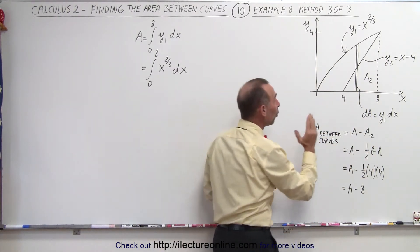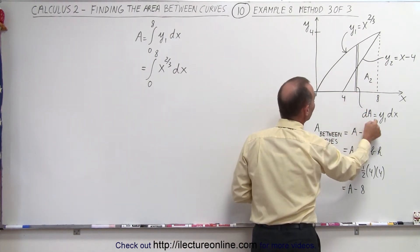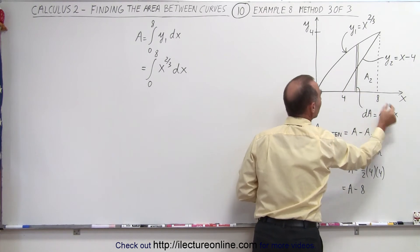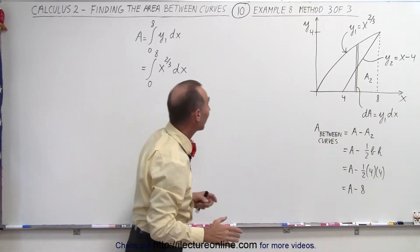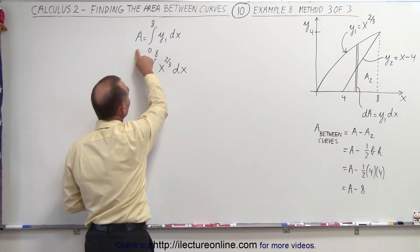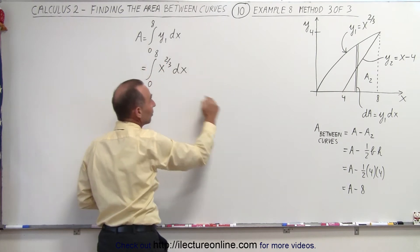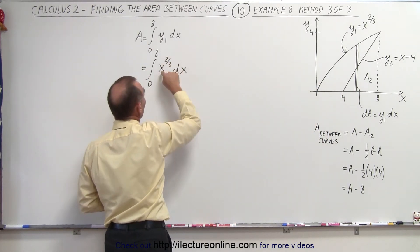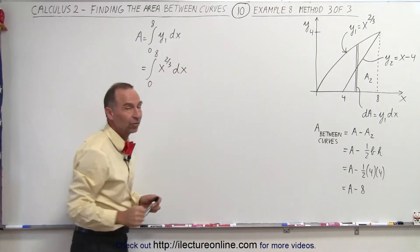In that way we only need one area element dA, which is defined by the height, which is the height from the x-axis to the curve which is y1, times the width which is dx. So finding the total area then is simply the integral from zero to eight over the area element y1 dx, and y1 is defined as x to the two-thirds.